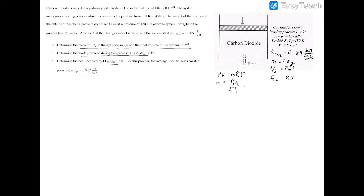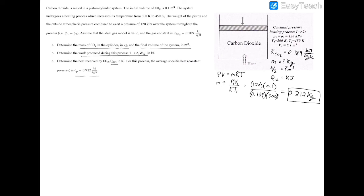Plugging in: 120 kilopascals times 0.1 meters cubed, divided by 0.189 kilojoules per kilogram Kelvin times 300 Kelvin. This gives a mass of 0.212 kilograms. By conservation of mass, mass 1 equals mass 2, which equals the mass — consistent throughout the process.